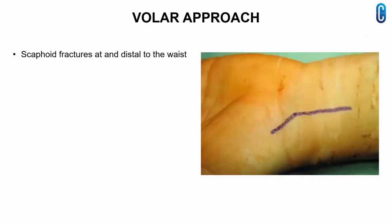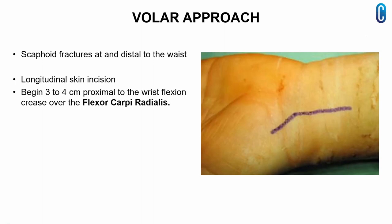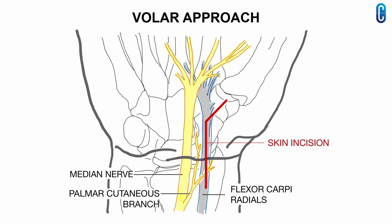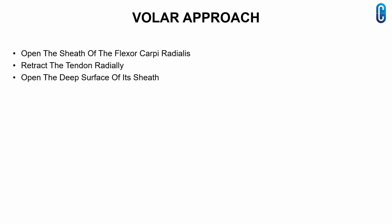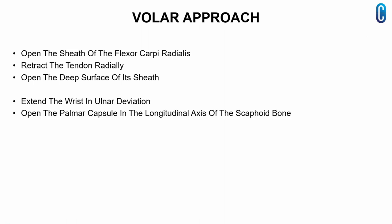The volar approach usually gives the best exposure for scaphoid fractures at or distal to the waist. A longitudinal skin incision is made over the palmar surface of the wrist, beginning 3-4 cm proximal to the wrist flexion crease over the flexor carpi radialis. The incision is extended distally and curved radially toward the scaphoid-trapezial and trapeziometacarpal joints. The sheath of the flexor carpi radialis is opened, the tendon retracted radially, and the deep surface of the sheath opened. With the wrist in ulnar deviation, the palmar capsule is opened in the longitudinal axis of the scaphoid bone, and with sharp dissection, the fracture site is exposed.